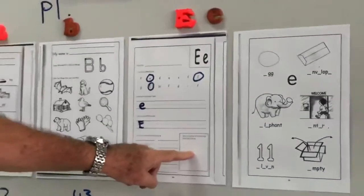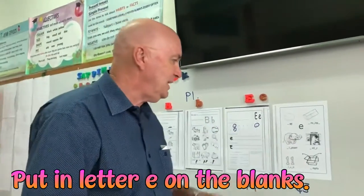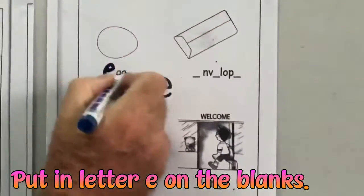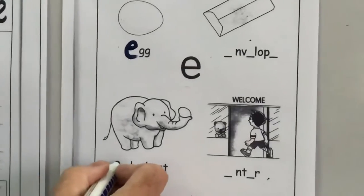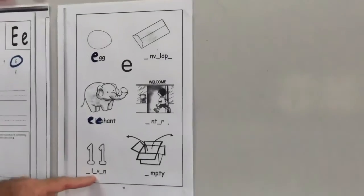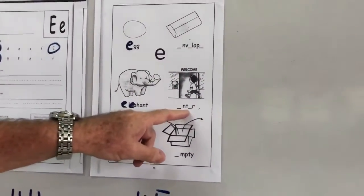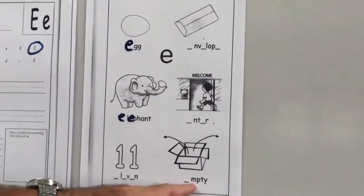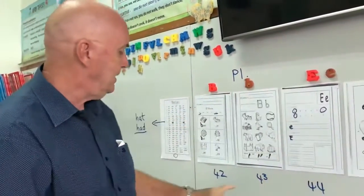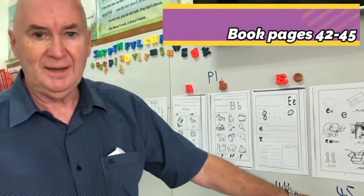And then let's put in the letter E here, look, shall we? So here look, we put in E for egg, E for elephant, and what have we got? E, eleven, E, envelope, E, enter, and E, empty. So two letter sounds: B and E, and it's your phonics book 42 to 45. OK.